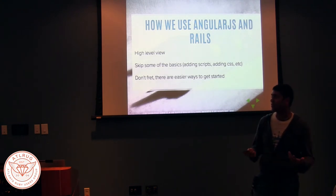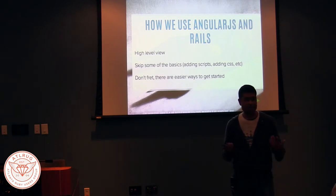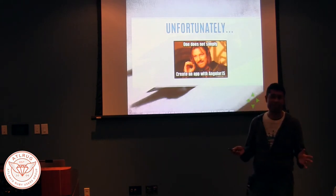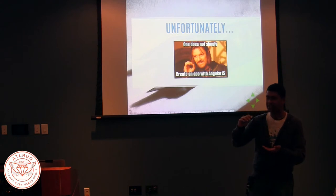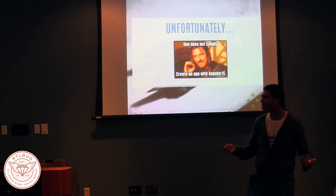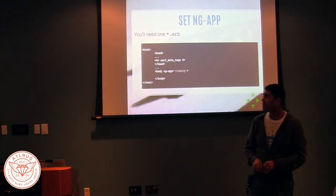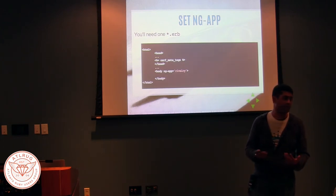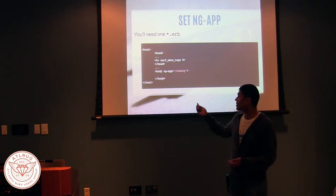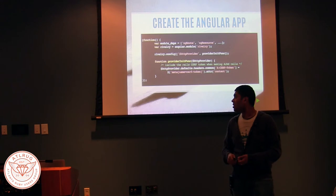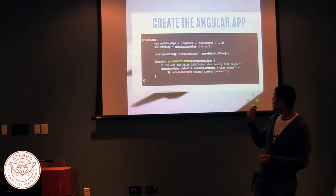This is how we use AngularJS in Rails at a high level — I'll skip a lot of basics and assume a basic level of JavaScript knowledge. One does not simply create an app with AngularJS. You go to the website, there's a great little one-page tutorial, but then you start reading the forums and no one's writing Angular that way. The first thing you've got to do is set the ng-app attribute on one of your elements — the element containing the entirety of your application. In this case I've named my application 'rivalry', and then you create the corresponding JavaScript.